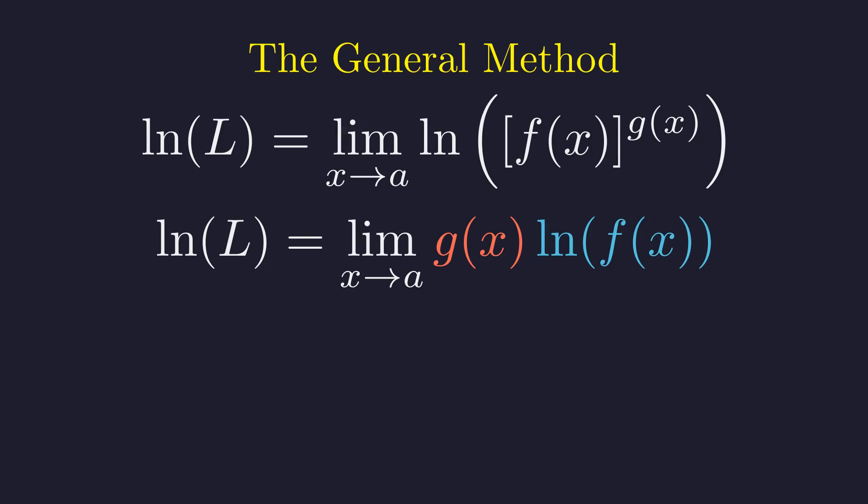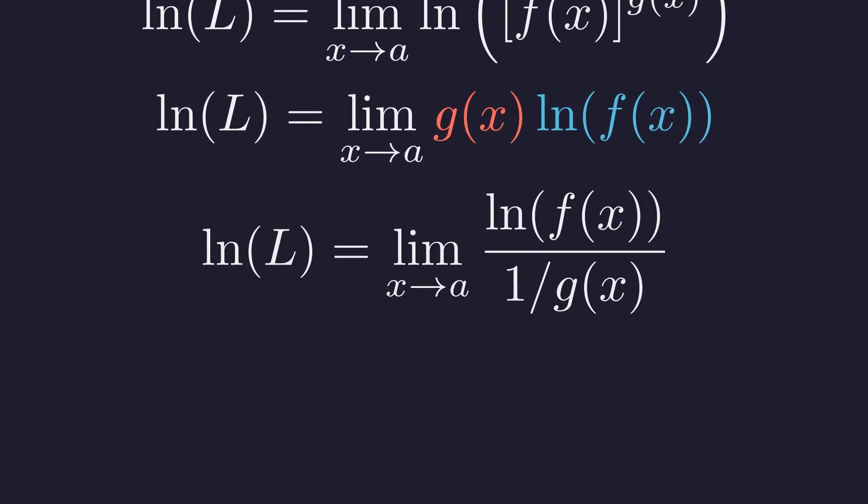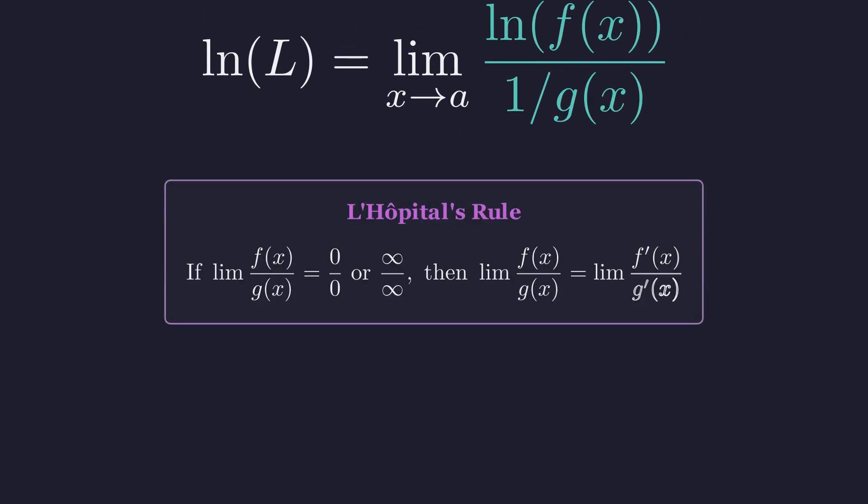To handle this new indeterminate form, we rewrite it as a fraction. We can do this because multiplying by g of x is the same as dividing by 1 over g of x. We rewrite the product as a quotient. This gives us zero over zero, which is perfect for L'Hopital's rule. L'Hopital's rule says that for zero over zero, or infinity over infinity limits, provided both functions are differentiable and the limit of the derivatives exists, we can take the derivative of the numerator and denominator separately and then evaluate the limit.